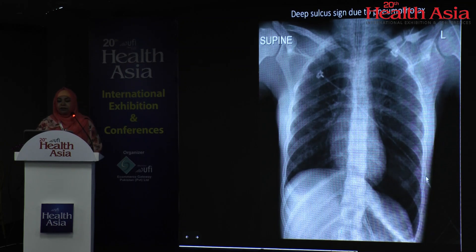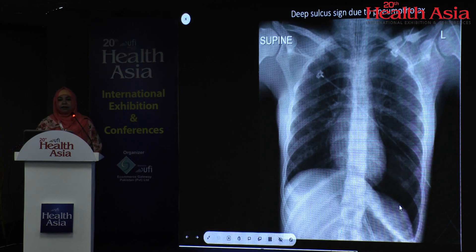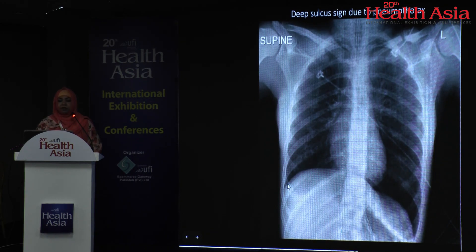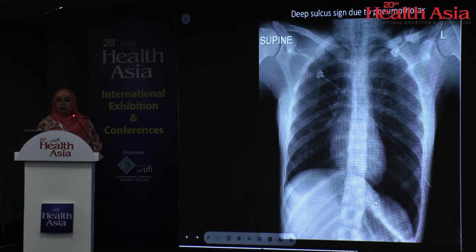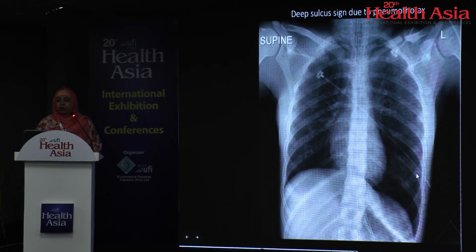Here is an important sign to look for on a supine radiograph: hyperlucency in the left lower lung zone with some depression of the diaphragm and a deep sulcus sign. The lateral costophrenic angle is very deep compared to the right side. This is an alarming sign and you should be thinking of a pneumothorax.